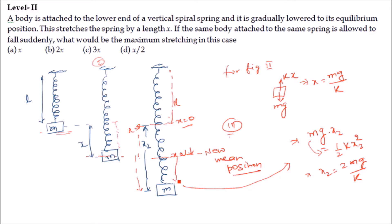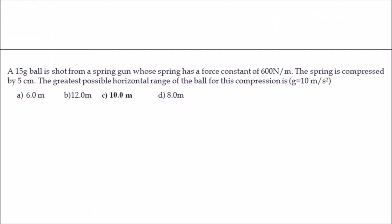From this, it is clear that the object moves a further distance x upward from its new mean position, oscillating between the two extremes before eventually settling at its new mean position. Therefore the maximum stretching is equal to 2x. The answer is B.